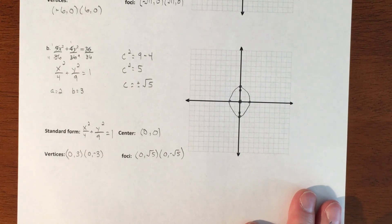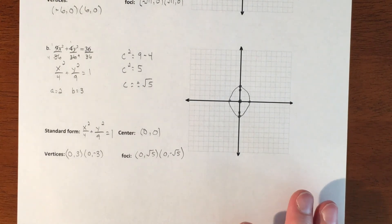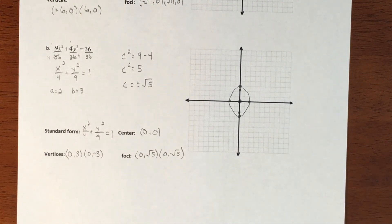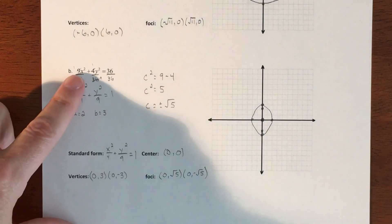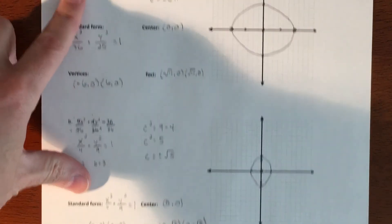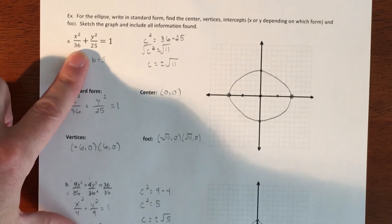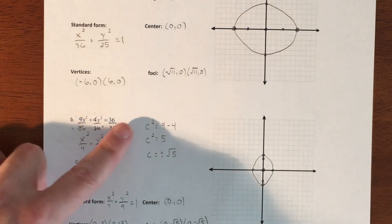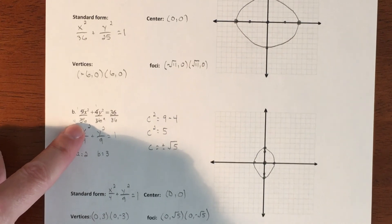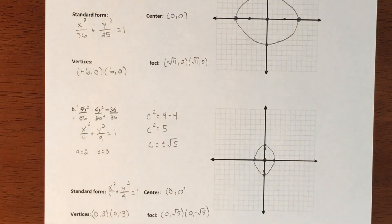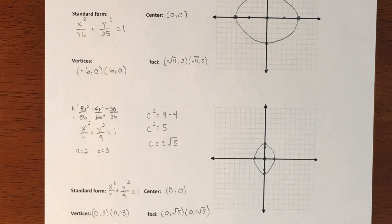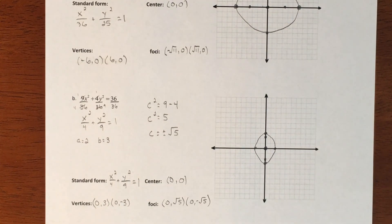The next example will cover what happens when the equation is not already in graphing form — not just a simple division, but with x terms, x squared terms, y terms, and y squared terms. We'll need to complete the square to get it ready to graph, and we'll do that on the next one.